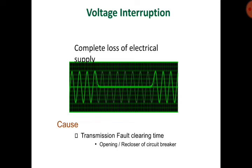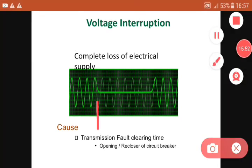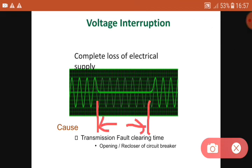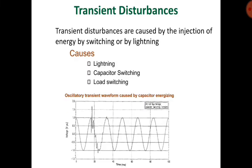Voltage interruption is a complete loss of electrical supply. In the waveform, a region shows complete loss of supply — this is a voltage interruption. Cases include: transmission fault, clearing time, and opening or re-closure of a circuit breaker.